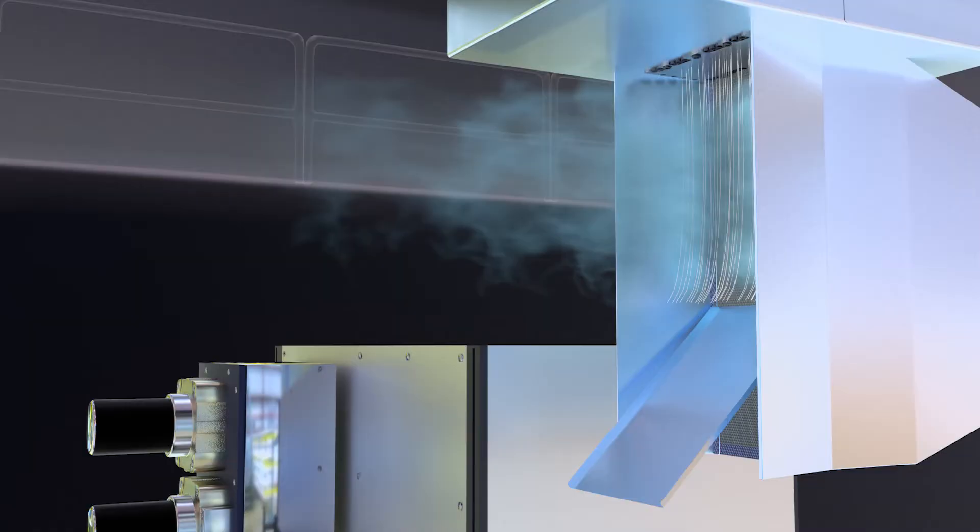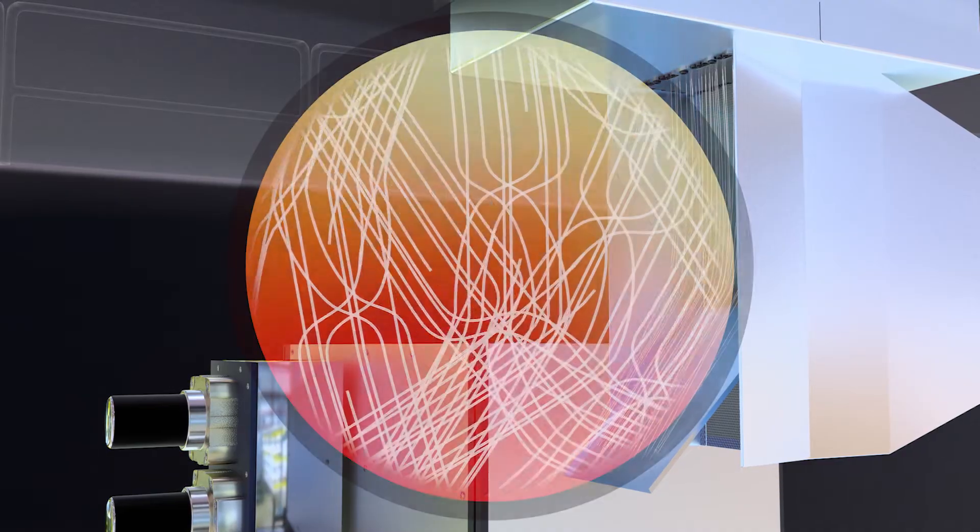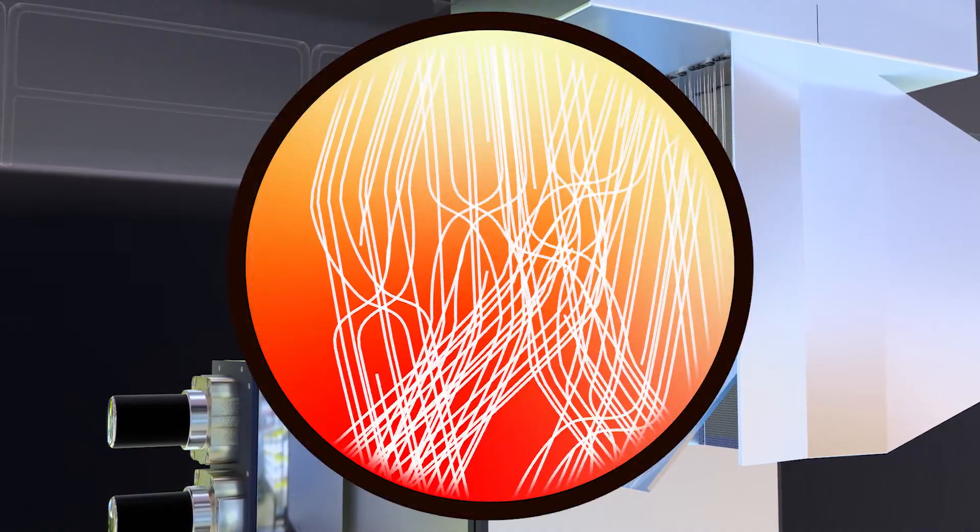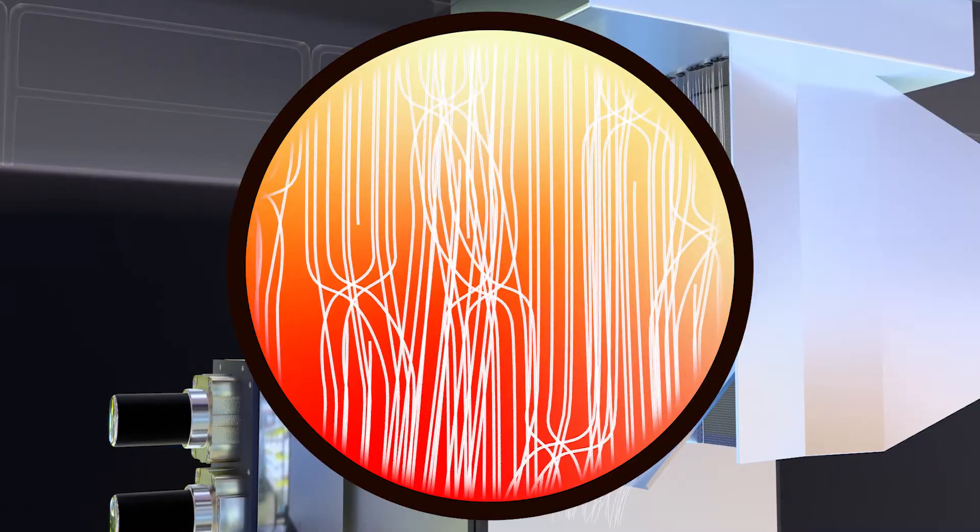The melted pellets form thin filaments and cold air then rapidly cools the filaments to achieve solidification. At this point, the random molecular structure of the plastic pellets is aligned, increasing the material's strength and usability.